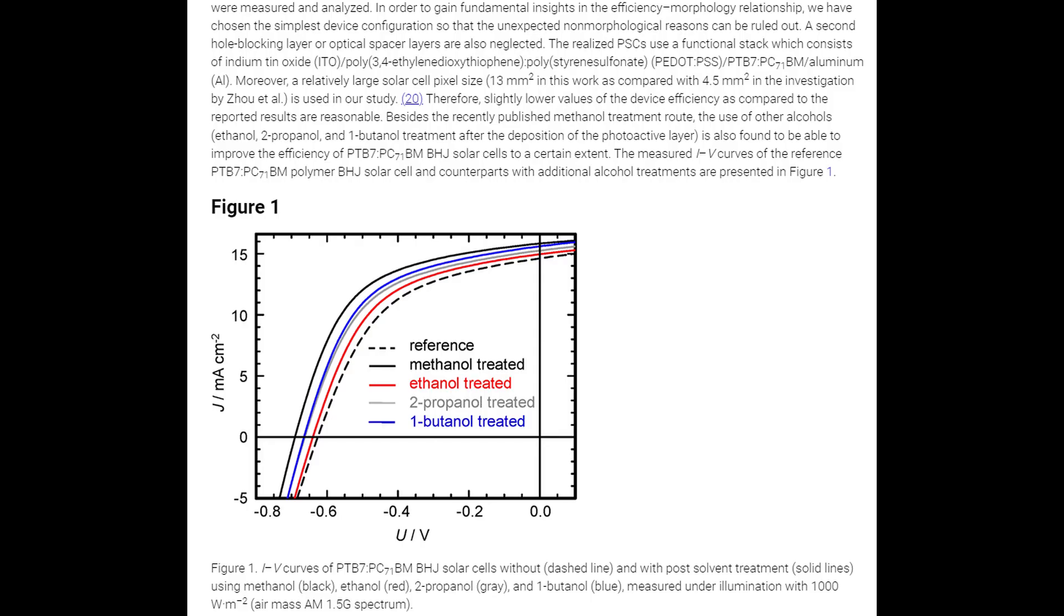Solar cell without dashed line and with post-solvent treatment solid line using methanol black, ethanol red, two-propanol gray, and one-butanol blue. Measured under illumination with 1000 W/m² AM 1.5G spectrum.